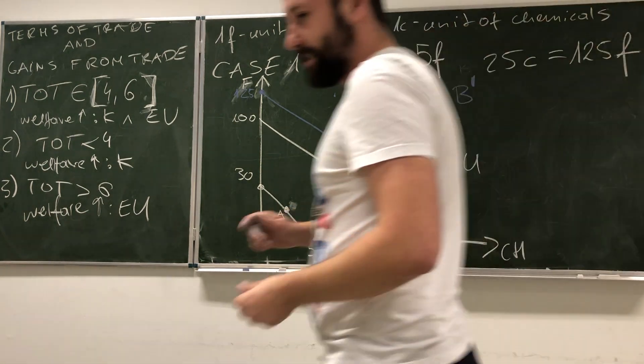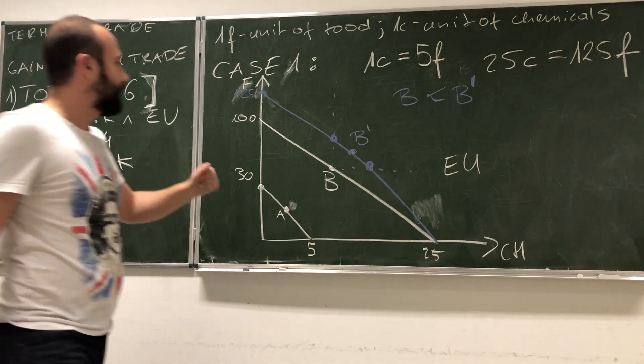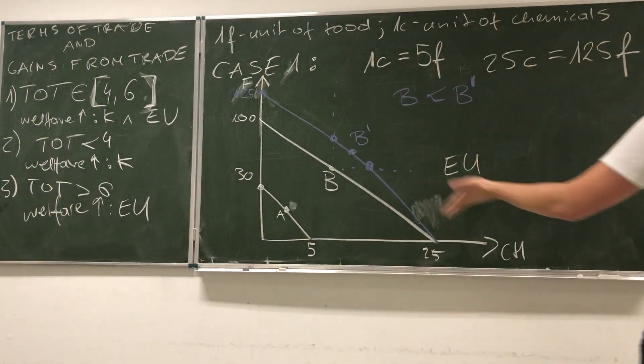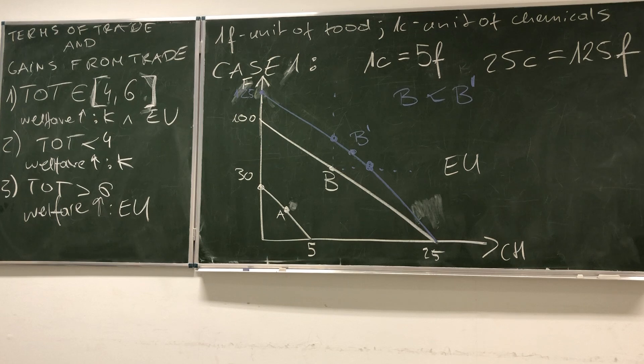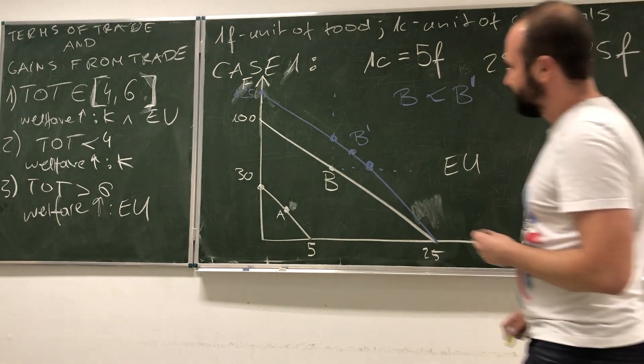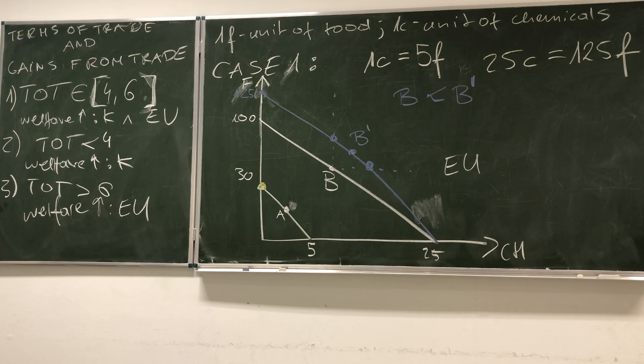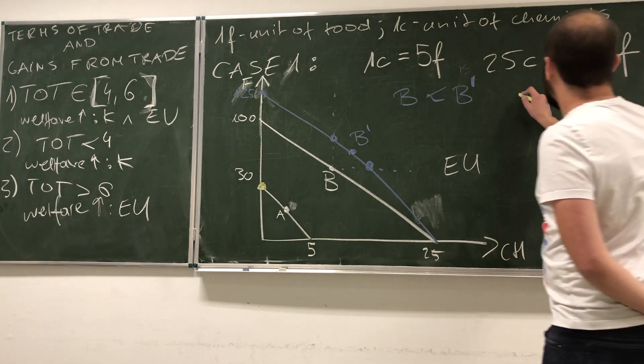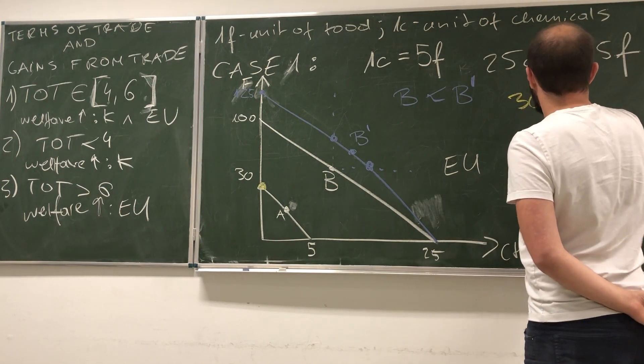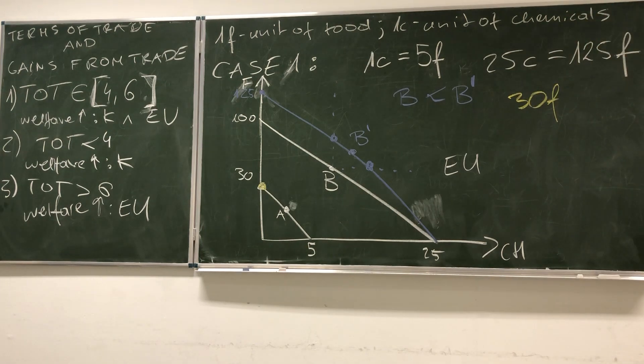Assuming that EU chooses combination like B prime, we clearly see that B prime would be preferred to B because here we see that now the country EU is able to have more of both goods. And this is only because EU is able to specialize and trade on international markets. What is happening at the same time in Kenya? Kenya can do the very same thing. Kenya can specialize in production of food. If Kenya is going to produce 30 units of food, it can exchange it for 6 units of chemicals.